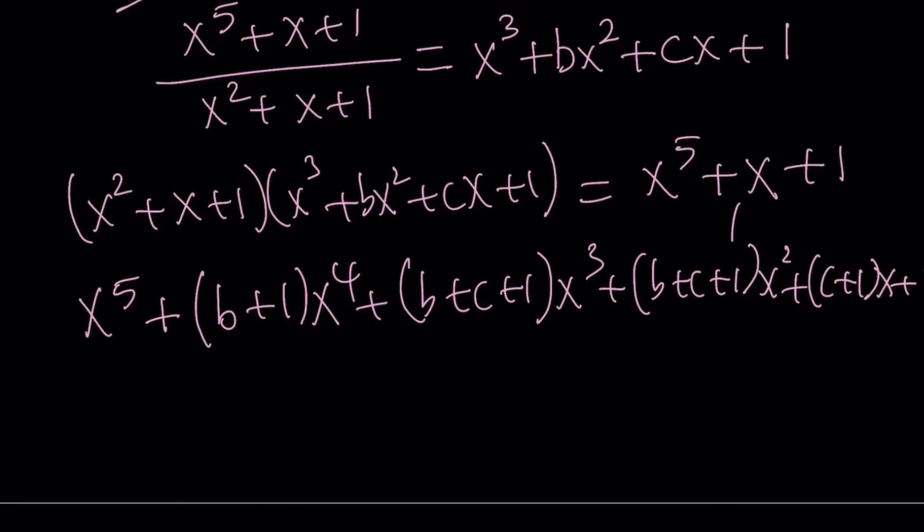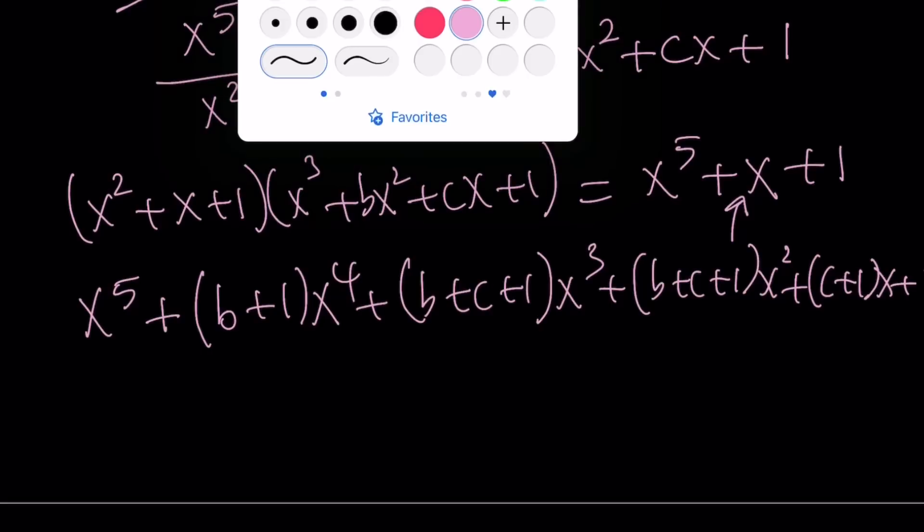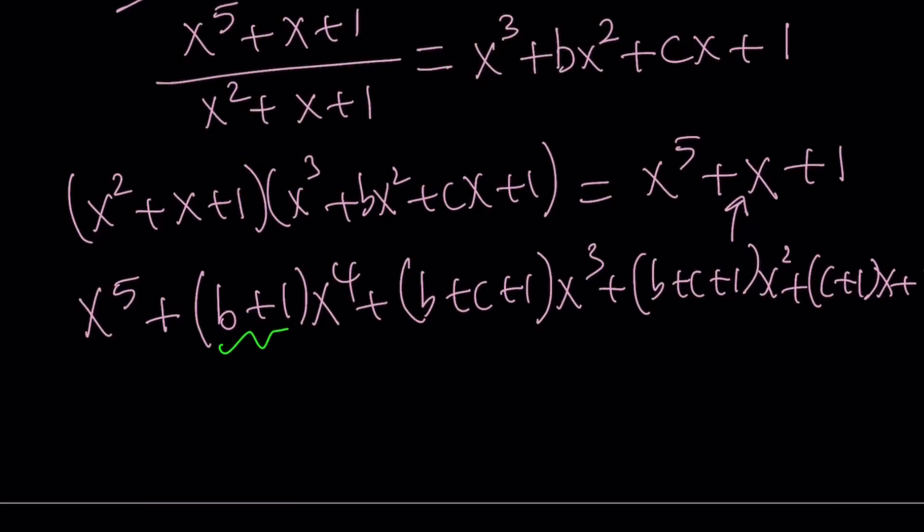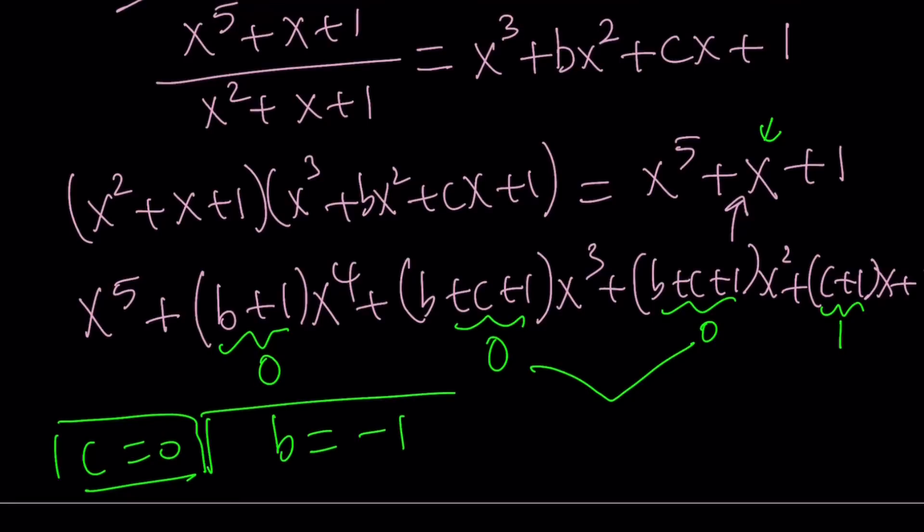Now, it's supposed to equal this, therefore, we get the following. This is supposed to be zero, there's no x to the fourth here. This is supposed to be zero, and this is supposed to be zero. They all have to be zero, but these two are the same, so it doesn't really matter. The coefficient of x is supposed to be one, which means c is equal to zero. Awesome. What about the other equations? One is one, and b is equal to negative one. Great.